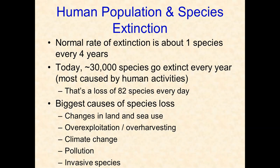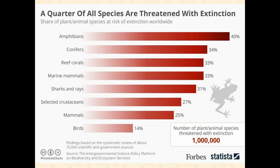The biggest causes of species extinction include changes in land and sea use — such as converting forests to agricultural fields — over-exploitation, climate change, pollution, and invasive species. Looking at extinction rates by group, amphibians are the most threatened, followed closely by conifers, coral reefs — linked to climate change and coral bleaching — marine mammals, sharks and rays, crustaceans, mammals, and birds. By far the biggest threat is to amphibians.